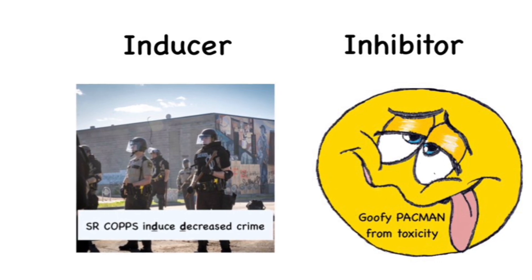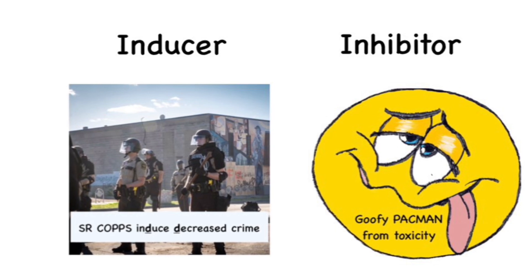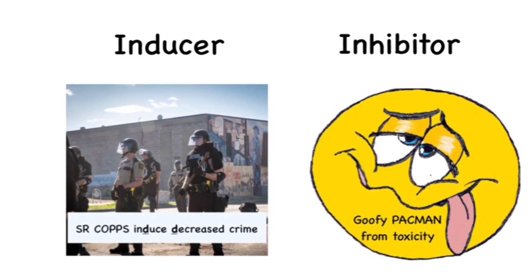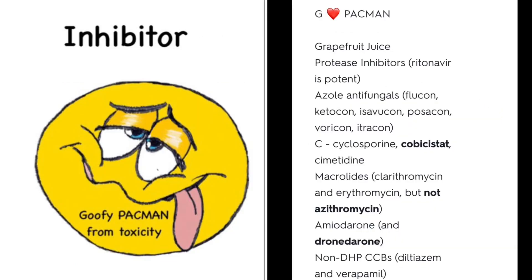To help you remember inhibitors, we use the acronym G-PACMAN — Grapefruit juice, Protease inhibitors like ritonavir (the booster), azoles, Cyclosporine, Cobicistat, Cimetidine, Macrolides (not including azithromycin), Amiodarone and Dronedarone, Non-DHP calcium channel blockers like diltiazem and verapamil. These are the drugs that can potentially cause toxicity of the substrate.